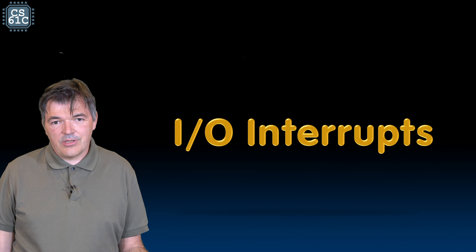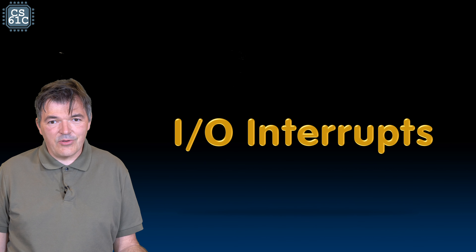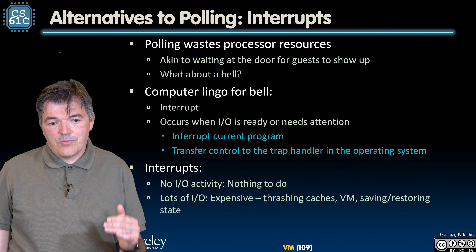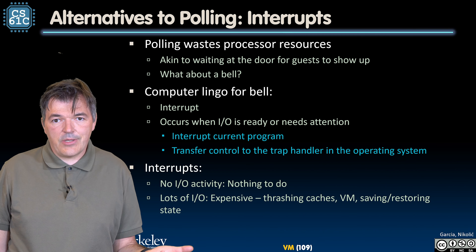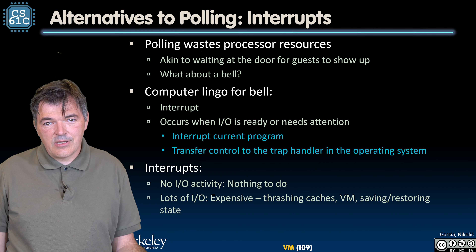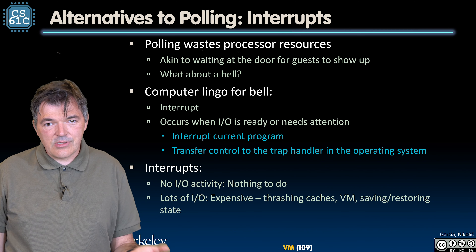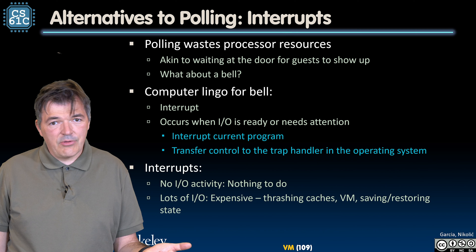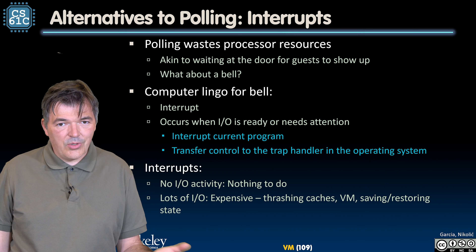More commonly, the way we work with I/O devices is through the known mechanism of interrupts. We have already highlighted that polling wastes processor resources — whether the input-output device has something to tell us or not, we still go to it and check. If it has no data for us, we still spend processor cycles to poll it.